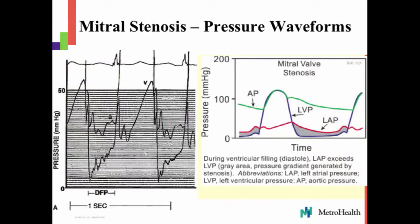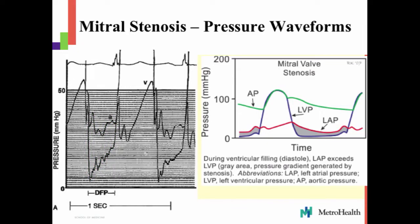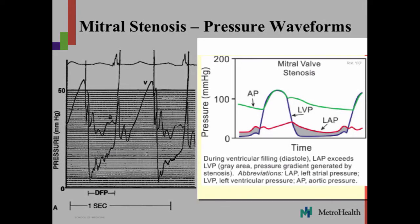When we look at pressure waveforms in the cath lab: this is the left ventricular pressure right here, and this is the left atrial pressure right here. Notice you have a very large gradient between the left atrial pressure and the left ventricular pressure in diastole. All this area right here — there is a pressure gradient between the left atrium and the left ventricle in diastole. This is what the left atrium has to overcome to push the blood into the left ventricle.